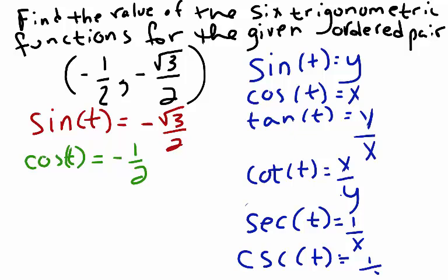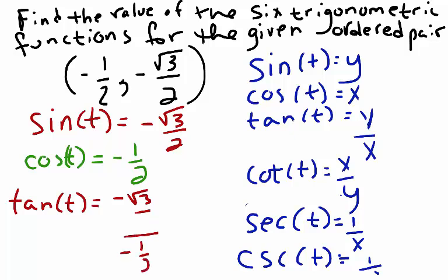Tangent of t equals y over x. So in our case, tangent of t equals negative square root of 3 over 2 divided by negative 1 half. Because we have a complex fraction, we'll multiply by the reciprocal. Negative times negative gives us positive, so tangent of t equals square root of 3.